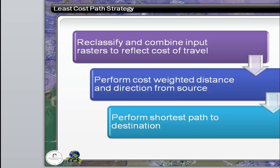The overall strategy is, once you determine what your input rasters will be — and you may have to convert some of your vector layers to raster — you're going to reclassify those and then combine them to reflect the cost of travel over the surface. Then you're going to use the cost-weighted distance and direction tools to determine the cost from the source. And then the final step is you'll perform the shortest path analysis to the destination location.